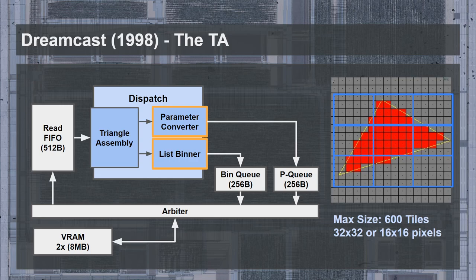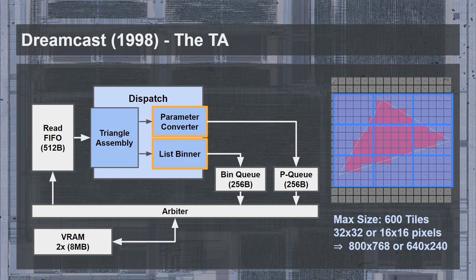The Tile Accelerator was capable of binning up to 600 tiles of 32x32 pixels, or 16x16 pixels when performing screen space supersampling by rendering at twice the resolution — resulting in a maximum screen size of 800x768 or 640x240 in supersampling mode. The binning step assigned bins based on bounding box overlap, meaning some triangles may be assigned to a bin with no actual overlap, deemed an acceptable loss. The output of the TA went into two write-back queues of approximately 256 bytes each, storing triangle parameters in the bin list separately in video memory for later use by the image processor.